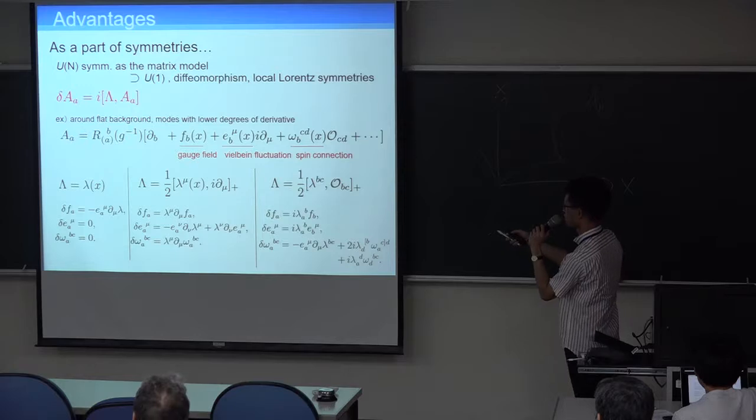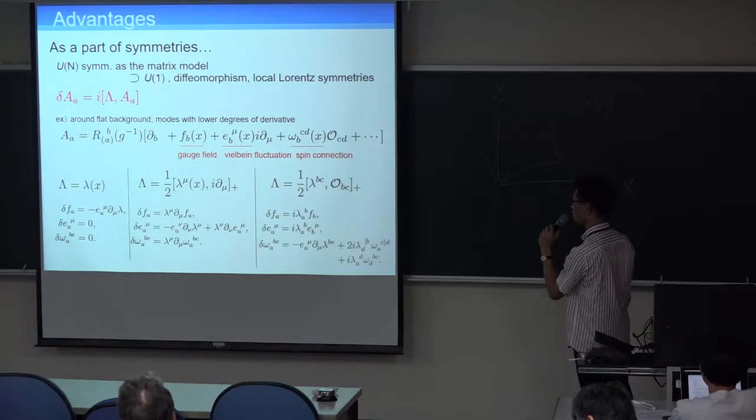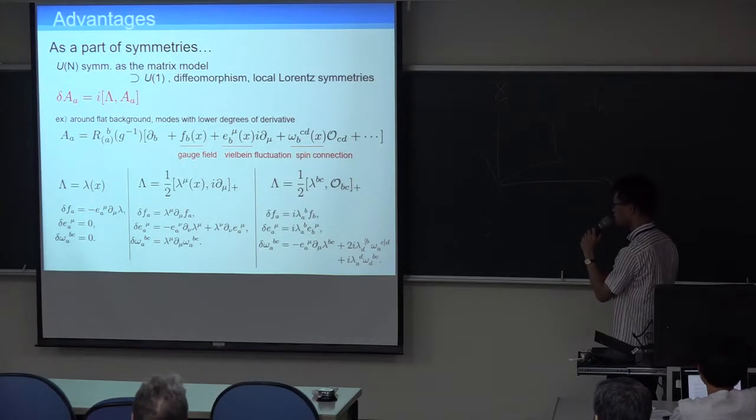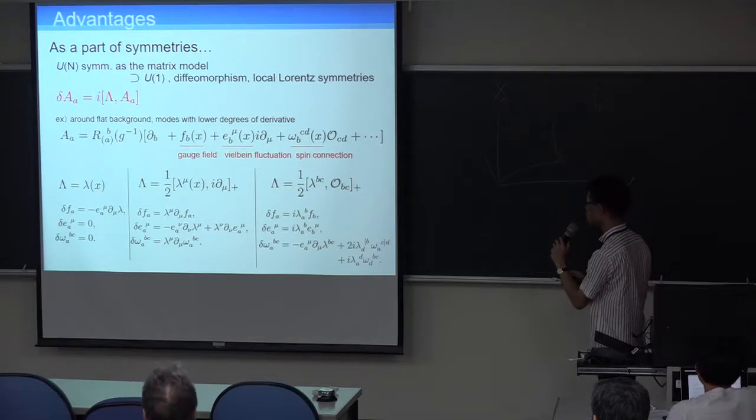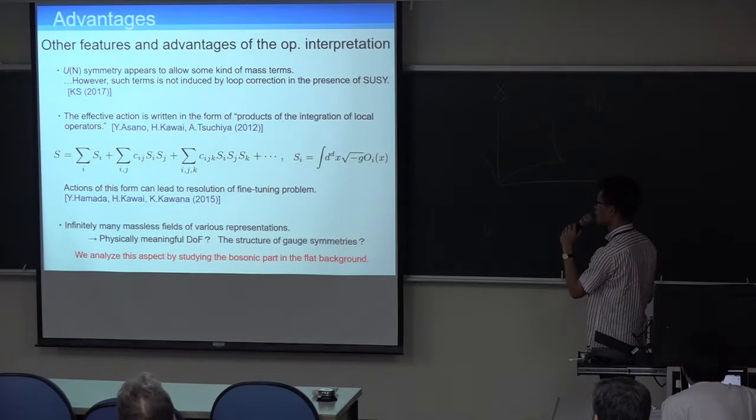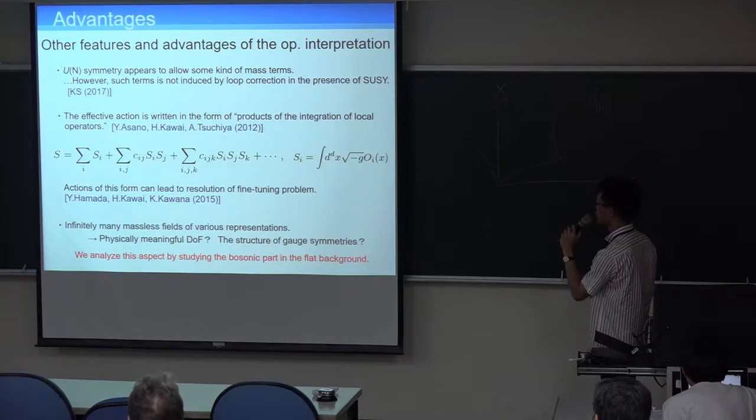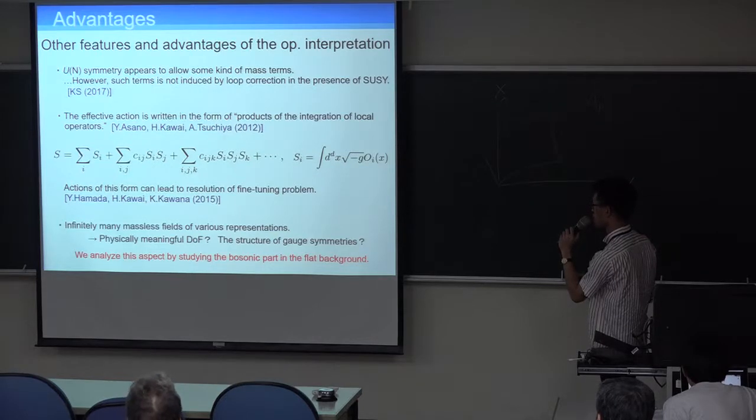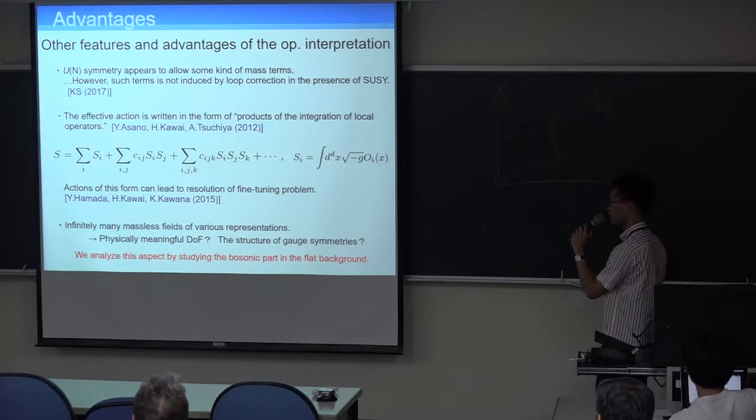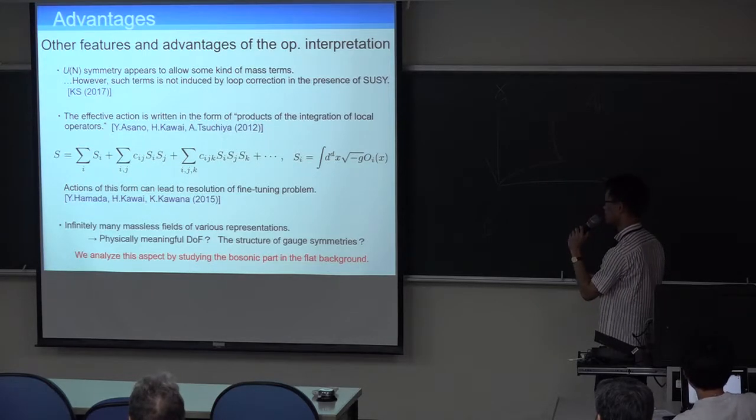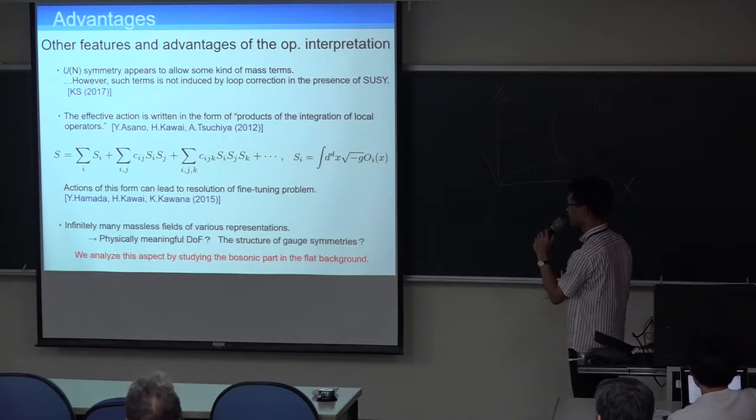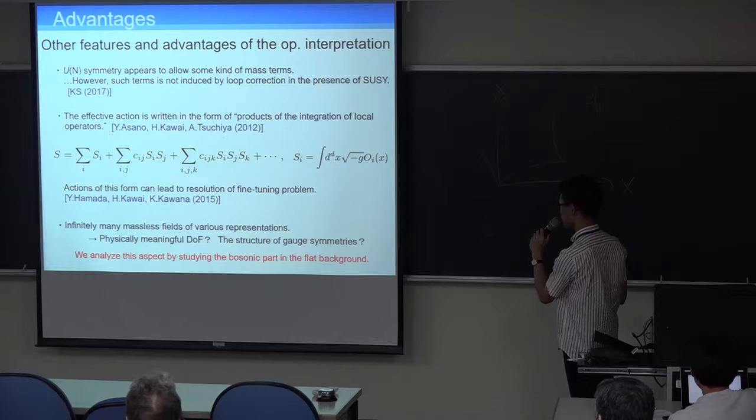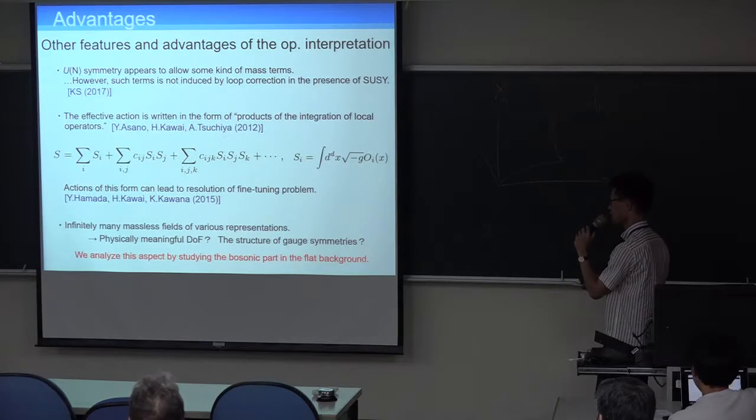And we can also show that the fluctuation on this solution is field living on this Ricci-flat spacetime. And the second advantage is that a part of symmetry, a part of unitary symmetries, as the matrix model contains a U(N) diffeomorphism and local Lorentz symmetries. And then, especially around the flat ground, modes with lower degrees of derivative, and this AF and E and omega, can be identified as gauge field and vierbein fluctuation and spin connection respectively.